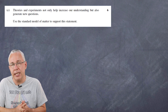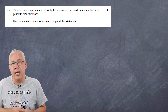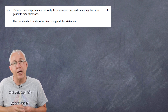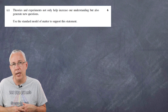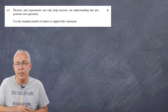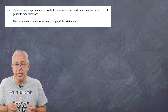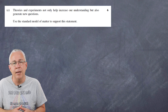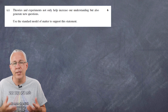Part E is a six-mark question. Those doing the HSC from 2019 onwards should expect long-response questions worth anywhere between seven and nine marks, often bringing in multiple concepts. In this case, from before 2019, it's a six-mark response dealing with theories and experiments that help increase our understanding but also generate new questions — a broad question set in the context of the standard model.